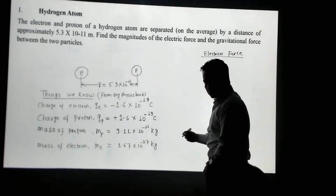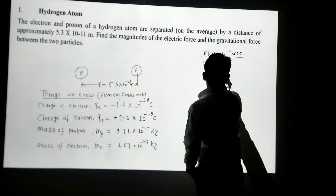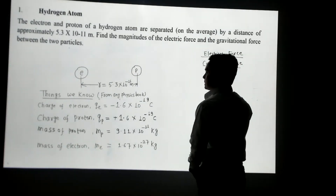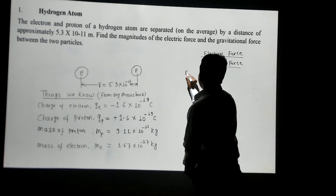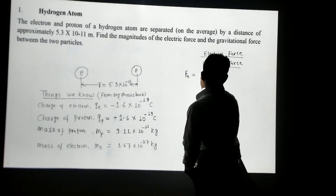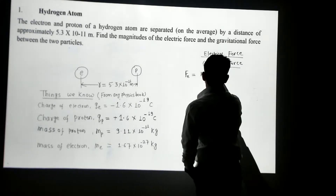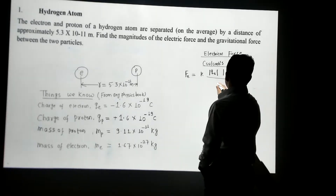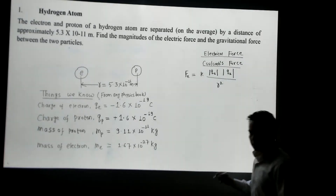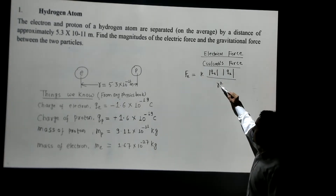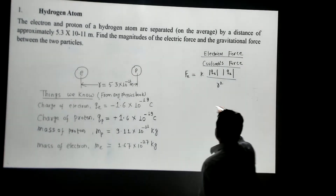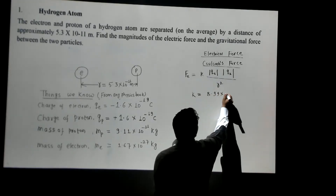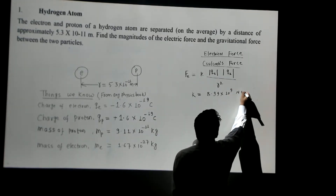Now let's calculate the electrical force, which we also call the Coulomb force. The electrical force can be given as F = k|q₁||q₂| / r². Here, q₁ is the charge of the electron, q₂ is the charge of the proton, and r is the separation between them. k is a constant with a value of 8.99×10⁹ N·m²/C².